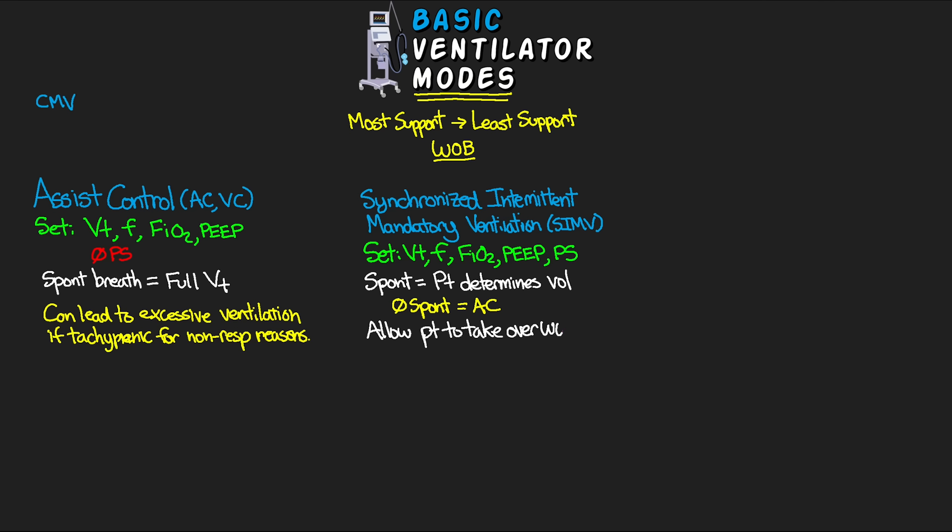SIMV is beneficial because it allows patients to gradually take back over their work of breathing. The less mandatory breath support given, the more work of breathing the patient takes on. SIMV was initially developed to help with weaning patients from the vent but is often used as a primary mode of ventilation. However, because some work of breathing is on the patient, it requires close observation of patients physiologically and psychologically. Risks include tachypnea and respiratory alkalosis from hyperventilation, or on the other side, insufficient minute ventilation leading to CO2 retention and respiratory acidosis.